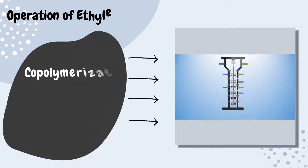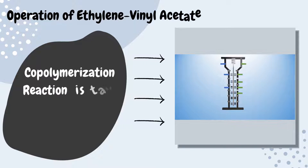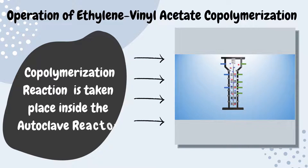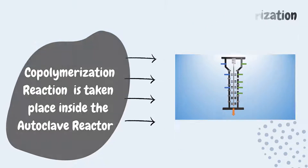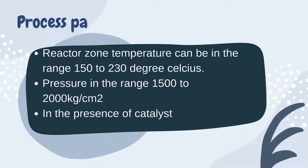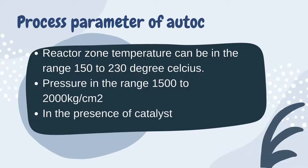In the reactor, the copolymerization process takes place to form EVA. In this autoclave reactor, the temperature is set to be in the range of 150 to 230 degrees Celsius, and the pressure in the range of 1500 to 2000 kilogram per centimeter square.